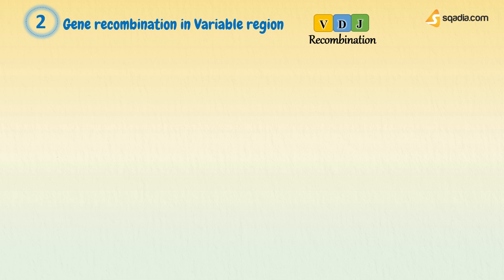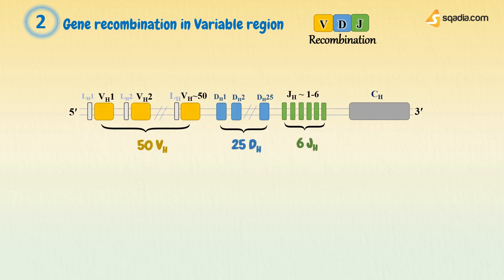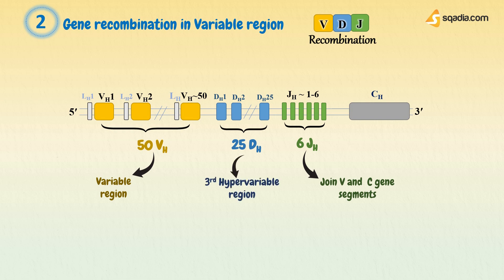As we know, approximately 50 VH, 25 DH, and 6 JH gene segments are present in the heavy chain locus on chromosome 14 that codes for variable region domain of the heavy chain. Here the V segment determines the variable region. J segments join the variable and constant segments. And the D segment encodes amino acids in the third hypervariable region.